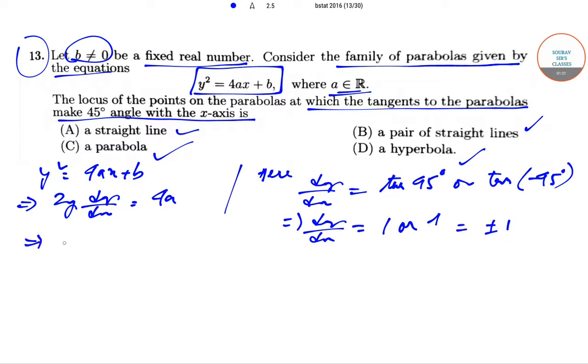So this will give us that 2y(±1) = 4a, and this will give us that y = ±2a. This is one part.